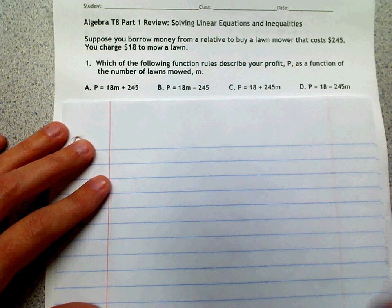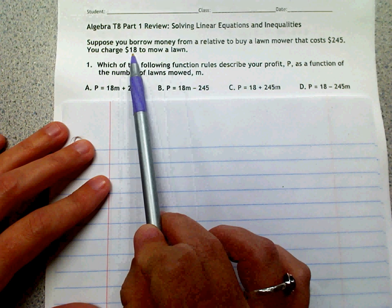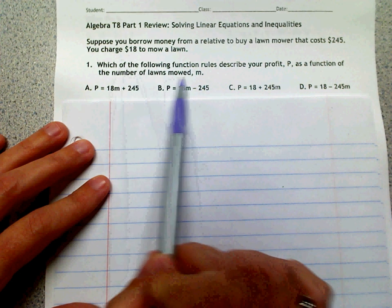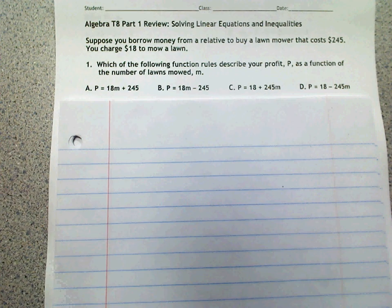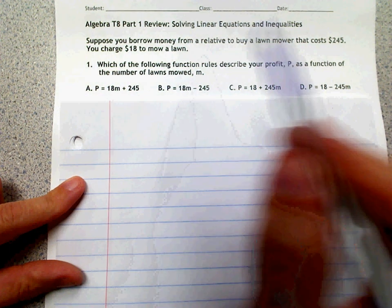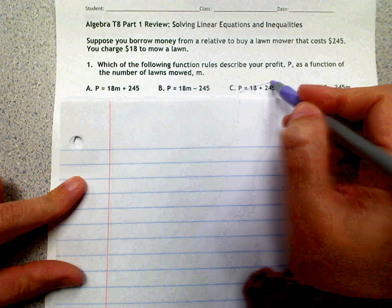And then we know that the number of lawns are $18 times the number of lawns we've mowed. So 18 and M should be together. So if we look, they are here, they are here, they're not here. So we can cross those out.